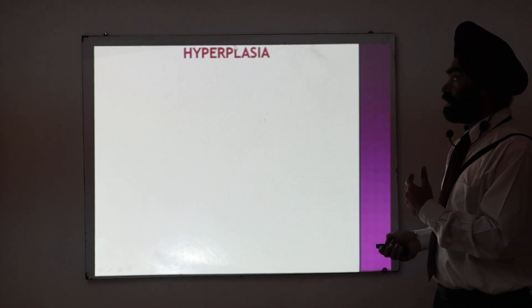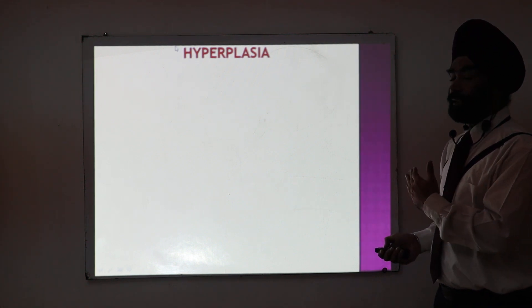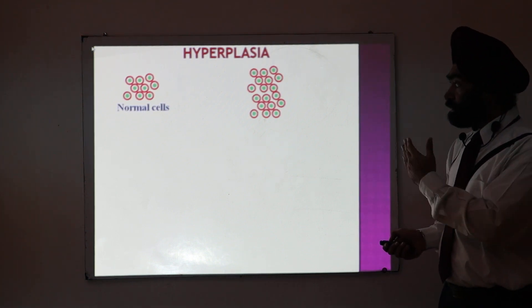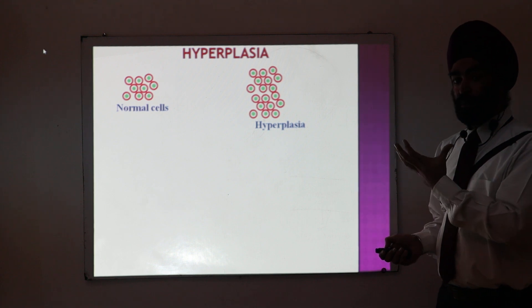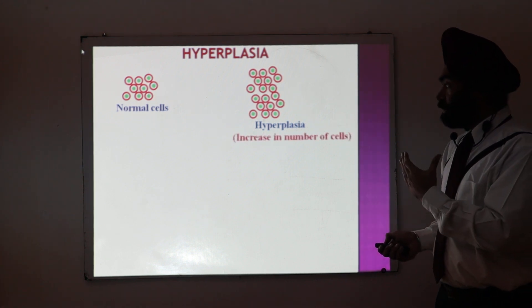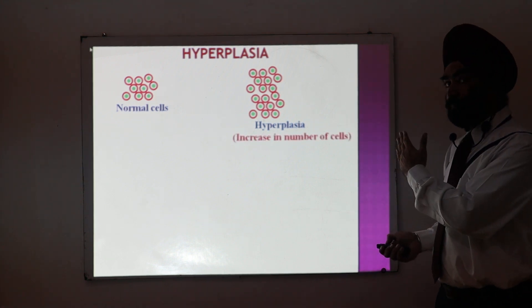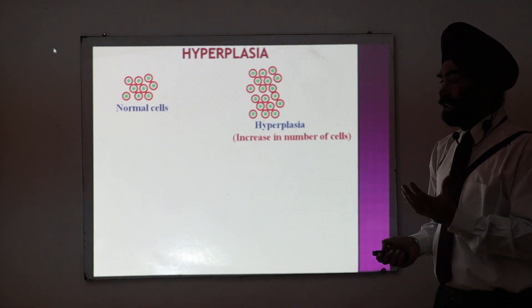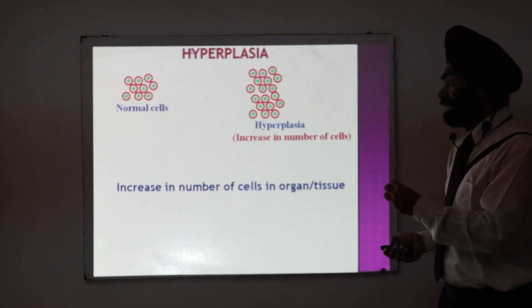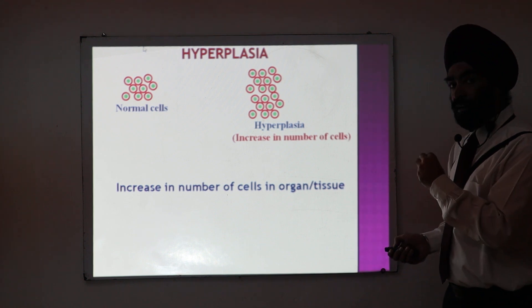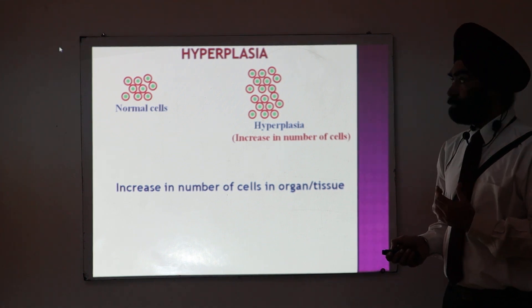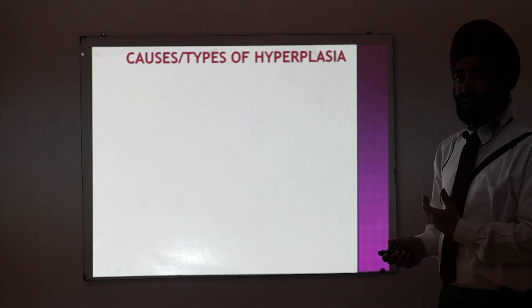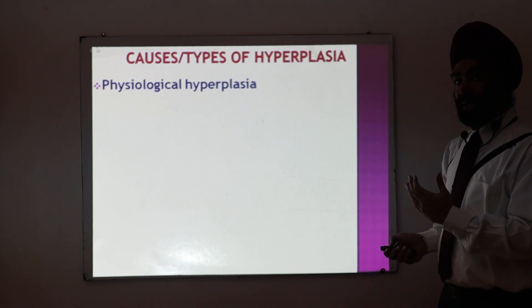Another kind of cell adaptation is called hyperplasia. In hyperplasia, the number of cells increases — you can see the number of cells has increased. Remember, hypertrophy was the increase in the size of the cell; in hyperplasia there is an increase in the number of cells in an organ or tissue.